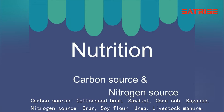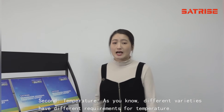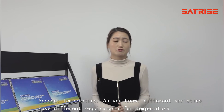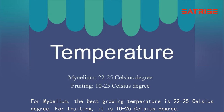As for nitrogen source, there are bran, soy flour, urea, and livestock manure. Second, temperature. As you know, different varieties have different requirements for temperature. For mycelium, the best growing temperature is 22 to 25 degrees Celsius. For fruiting, it's 10 to 25 degrees Celsius.